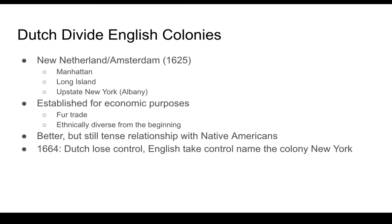By 1664, the English invaded and, without firing a shot, conquered New York City. Governor Peter Stuyvesant surrendered because he didn't have enough people to defend it. Once it became an English colony in 1664, it was renamed New York, named after one of the dukes in England.